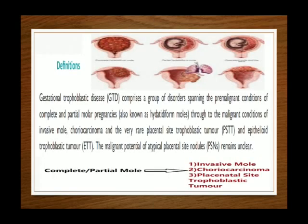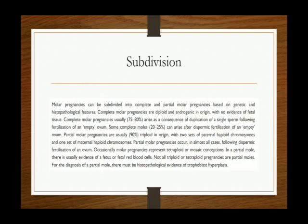The definitions are almost the same as in the previous guideline. Gestational trophoblastic disease comprises a group of disorders spanning the pre-malignant conditions of complete and partial molar pregnancies, also known as hydatidiform moles, through to the malignant conditions of invasive mole, choriocarcinoma, and very rare placental site trophoblastic tumor and epithelioid trophoblastic tumor. The malignant potential of atypical placental nodules remains under study. If we have complete or partial moles, we have three main phases: invasive moles, choriocarcinoma, and placental site trophoblastic tumor.